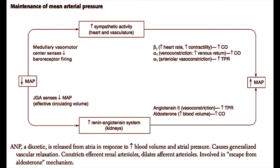Angiotensin-2 causes vasoconstriction, and this vasoconstriction causes an increase in total peripheral resistance. Angiotensin-2 also binds to receptors in the adrenal cortex and causes the release of aldosterone. Aldosterone causes the retention of salt and water, increasing blood volume and cardiac output. All of these mechanisms serve to increase mean arterial pressure.